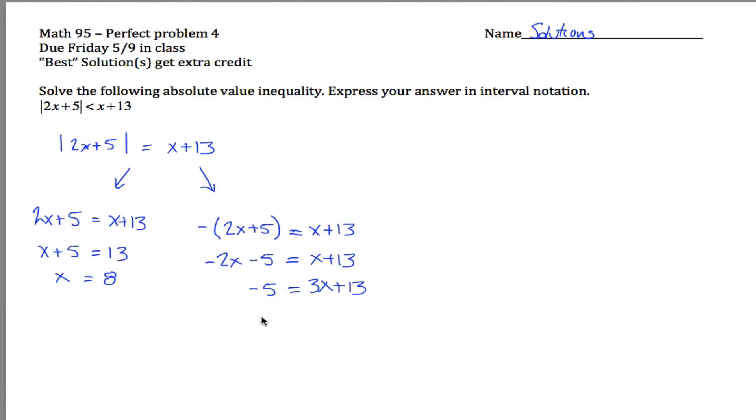Then subtract 13. Negative 5 minus 13 is negative 18. We're already over at negative 5 on the number line and you go 13 more spots to the left, you get to negative 18. So if 3x is negative 18, then x is negative 6. Divide both sides by 3 is what I'm saying.